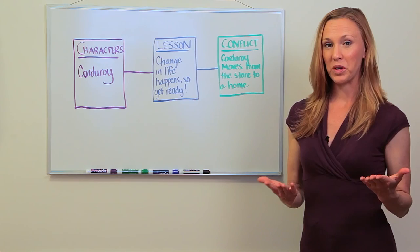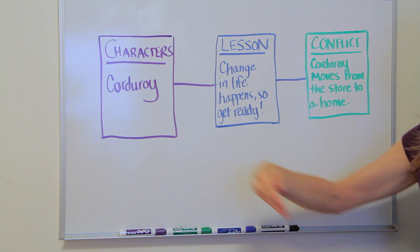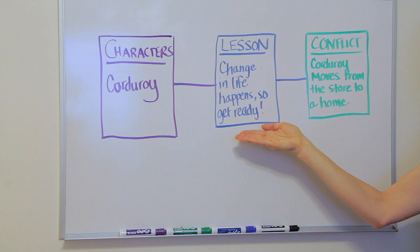So the first thing I have my students do is bring in their favorite children's book. I'll also read my favorite children's book, which happens to be Corduroy, and then on the board I have a chart where I identify the characters as I read the book.